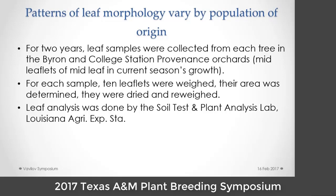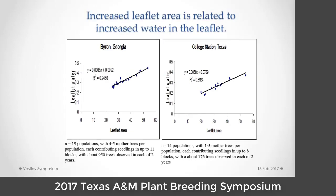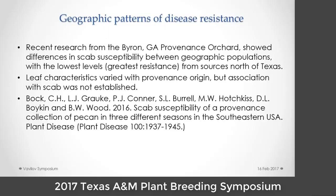Bruce Wood planted the best collection in Byron, Georgia. I came to ARS in 1988 and made a planting, but my populations are not as good as Bruce's. Over time, we collected leaf samples from each tree in Byron and College Station. These are mid leaflets from the mid leaf of the current season's growth. What we see is that leaflet area increases from east to west in both provenance orchards. That increase in leaflet area seems to be associated with leaflet water content, and leaflet density is greatest in the west — possibly an adaptation to dry climate. Looking at geographic patterns of disease resistance, the northern materials tend to have the greatest resistance, while the west and south show greater susceptibility.